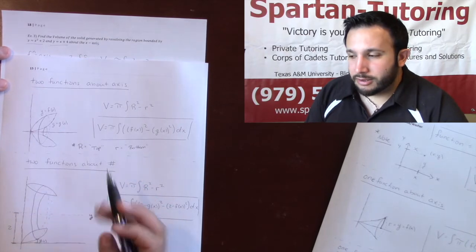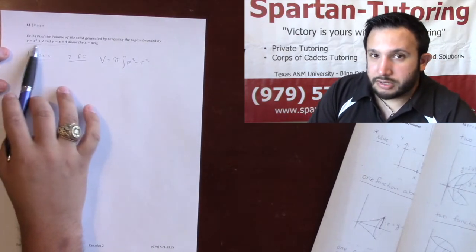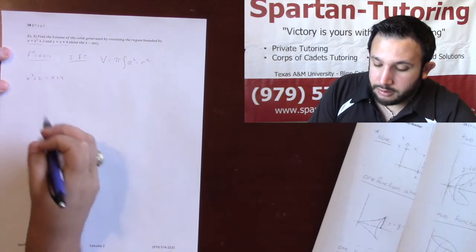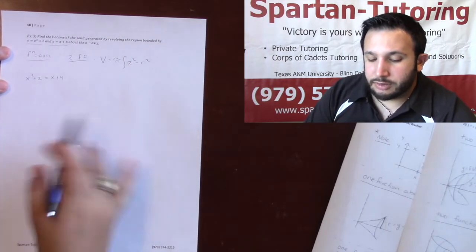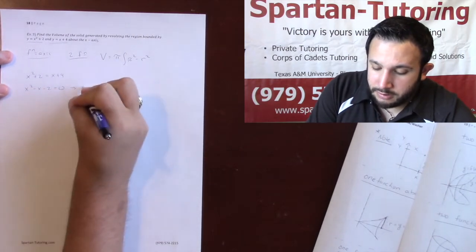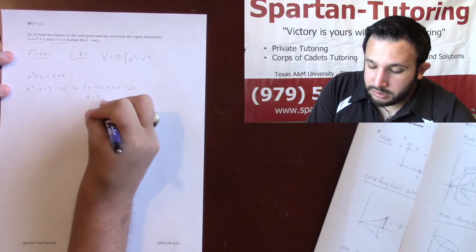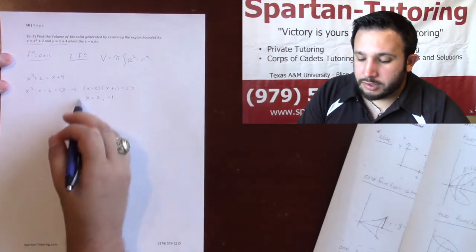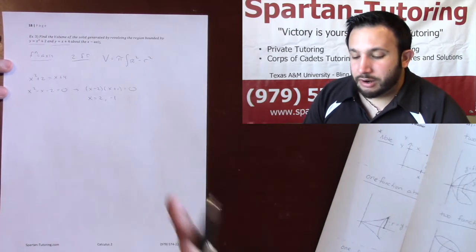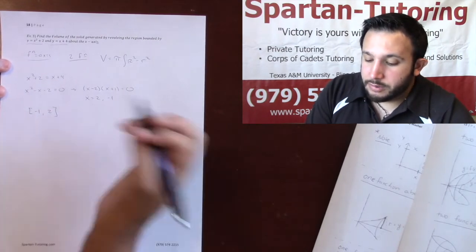With two functions about an axis, big R is just your top function and little r is your bottom — find top and bottom just like we did with area problems. First, find where they intersect: x squared plus two equals x plus four. Moving everything to one side: x squared minus x minus two equals zero, which factors to (x minus 2)(x plus 1) equals zero. So x equals two and negative one — those are our limits of integration.